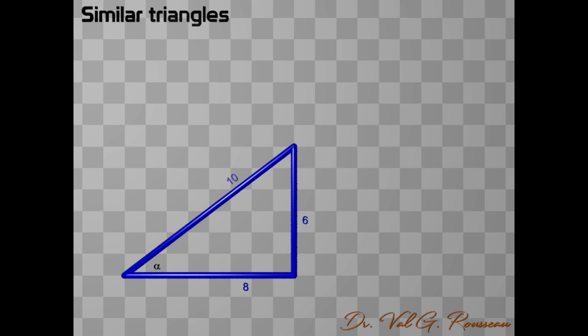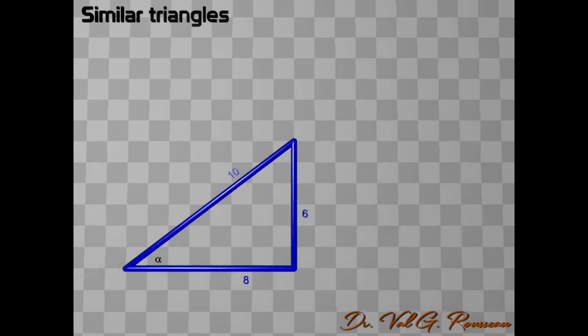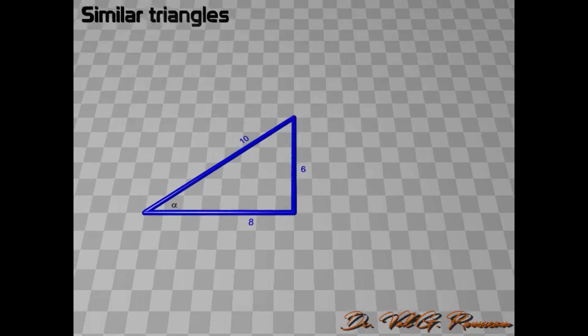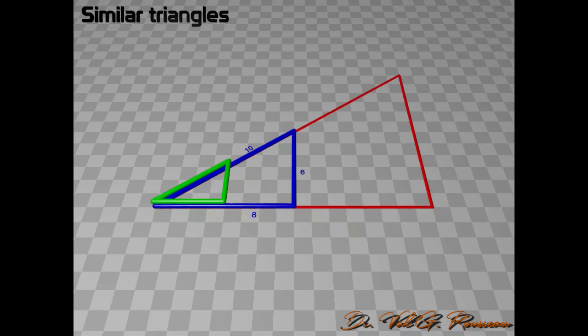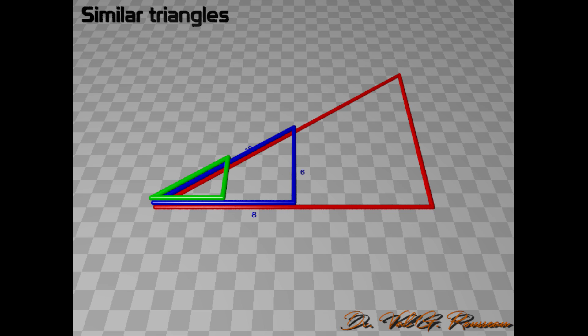Similar triangles are triangles that are obtained from one another by multiplying or dividing all sides' lengths by the same number. For example, the green triangle is obtained from the blue one by dividing all lengths by 2, while the red triangle is obtained from the blue one by multiplying all lengths by 2.